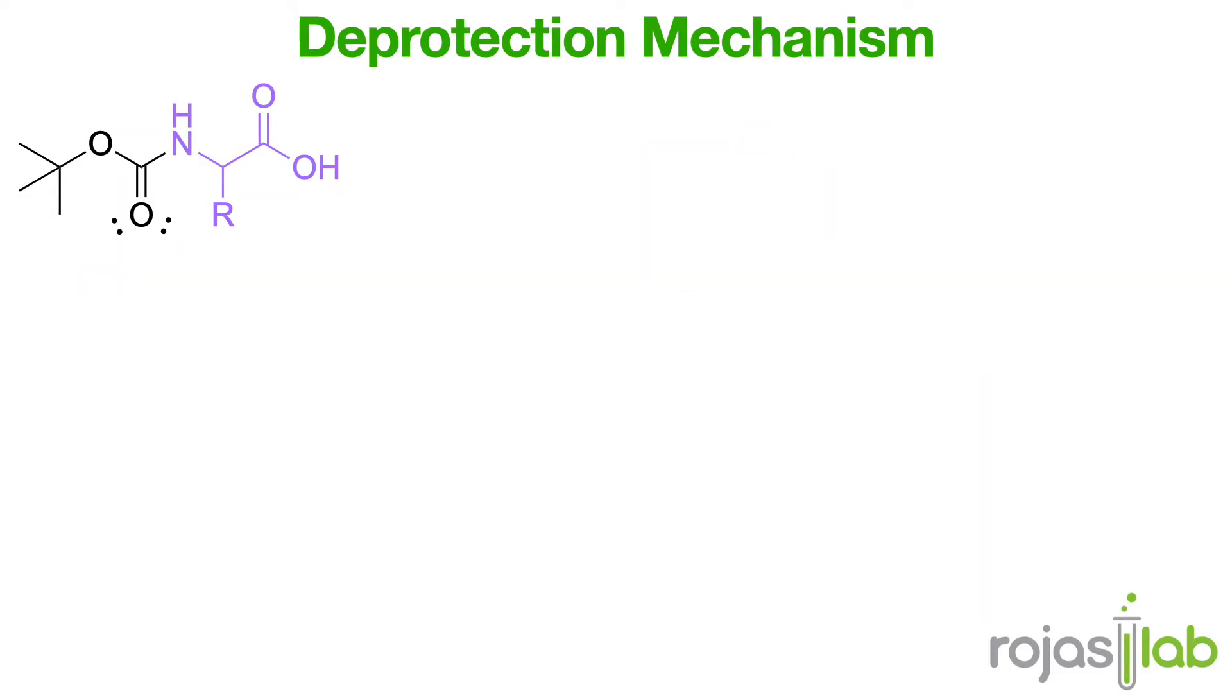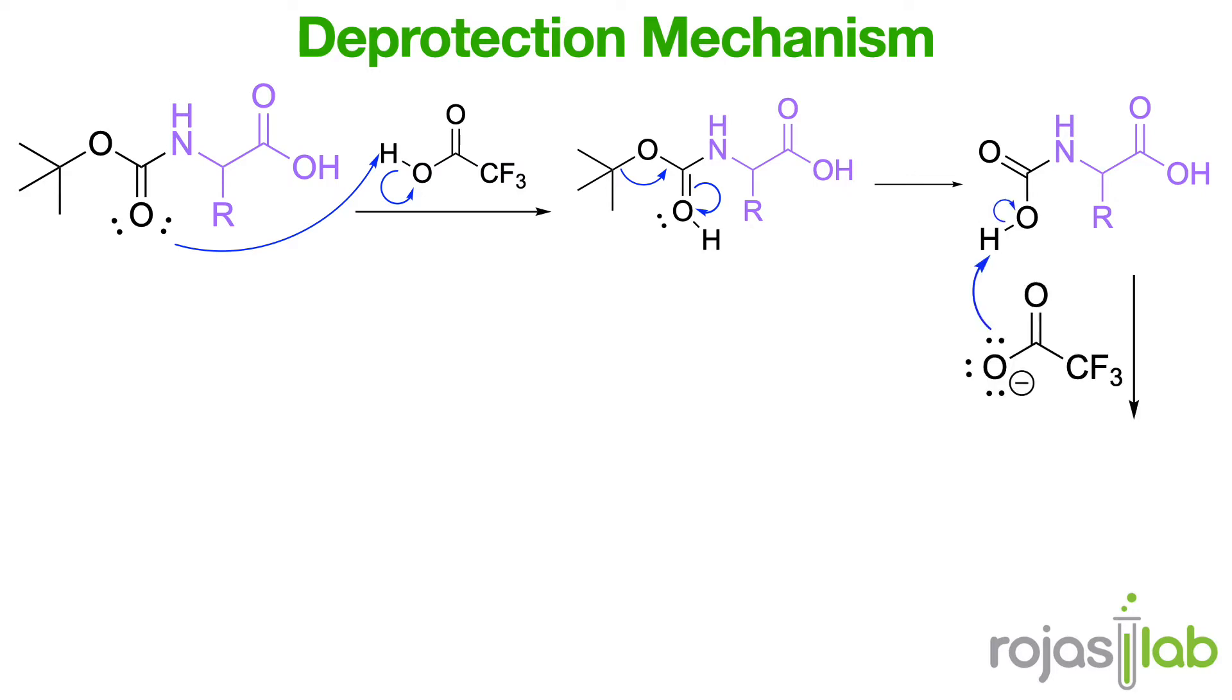The mechanism for that transformation is here. The carbonyl group is protonated by trifluoroacetic acid. Next, the carbamic acid functions as a leaving group. From here, the trifluoroacetate that was formed in the first step removes a proton from the carbamic acid. Next, a proton transfer is accompanied by loss of carbon dioxide.